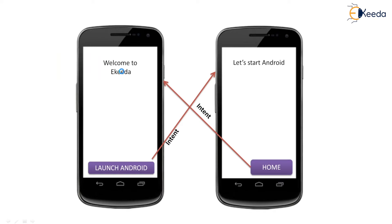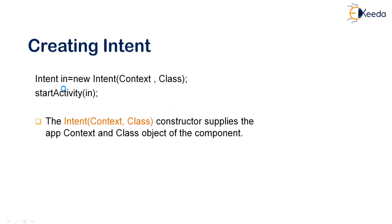I'm going to create a simple example. There is a small label stating 'Welcome to iKida', and I want to launch an Android course. When the user clicks on the 'Launch Android' button, it's going to start a new activity — a welcome activity. When you click on the home button, it comes back to the home page.